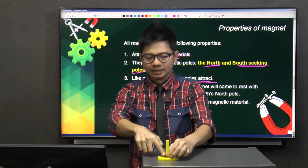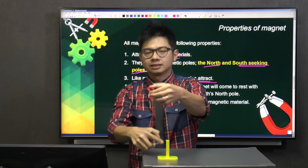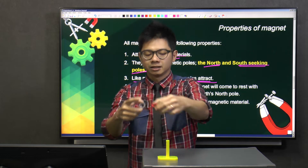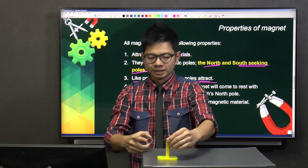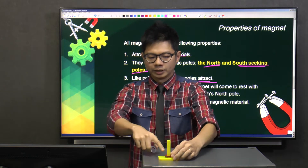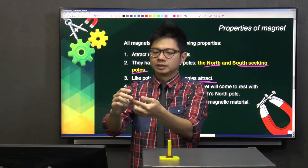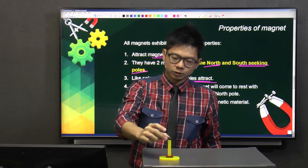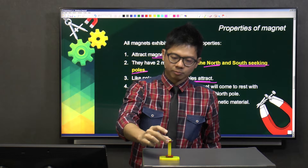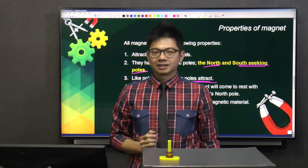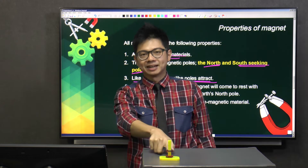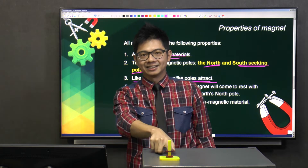This is a magnet here, and I'm going to place it here. This is north pole, and this is also north pole. So when I drop it, you can see that it's been suspended in mid-air.